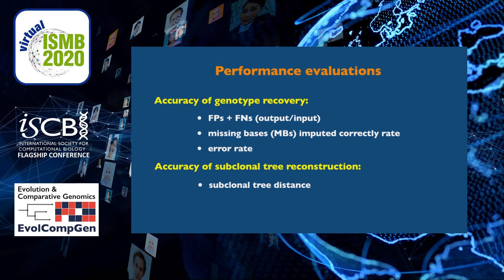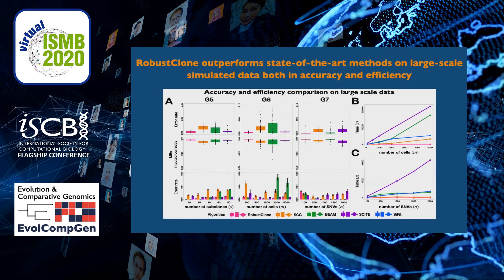We compare the performance of RobustClone to current mainstream methods under various simulated scenarios. The evaluation is based on several indicators to measure the accuracy of genotype recovery and subclonal tree reconstruction. The results demonstrate that RobustClone outperforms state-of-the-art methods on large-scale simulated data both in accuracy and efficiency.